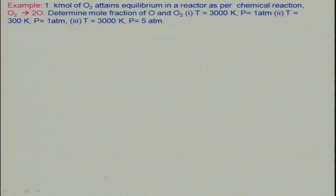Let us consider this example: 1 kilomole of oxygen attends equilibrium in a reactor as per the chemical reaction O₂ going to 2O. We will have to determine the mole fraction of O and O₂ at three different cases: 3000 K at 1 atm, 300 K at 1 atm, and 3000 K at 5 atm. We are basically changing the temperature and changing the pressure — that is the idea.